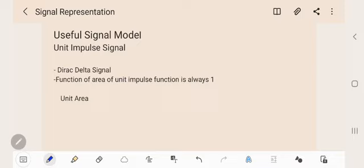Unit impulse signal is a Dirac delta signal. It is equal to infinity when T equals zero and zero when T is not equal to zero.